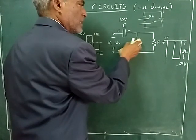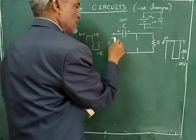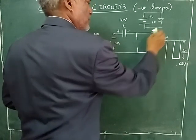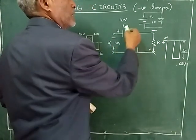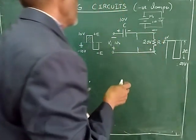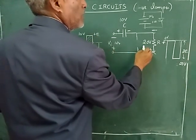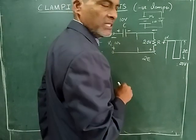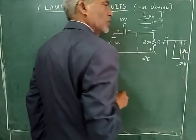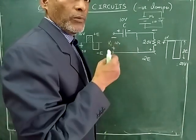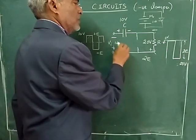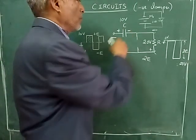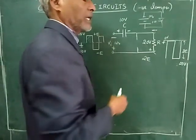Since the diode is reverse biased, it is treated as an open circuit. Now the voltage from the source (negative-positive, 10 volts) and the capacitor voltage (10 volts) add up: 10 plus 10 gives 20 volts. We are measuring the potential with reference to ground, so we see a negative voltage of 20 volts — the waveform has been clamped to minus 20 volts. This repeats each cycle: positive half cycle charges the capacitor, negative half cycle adds both voltages, giving a negative clamped output.